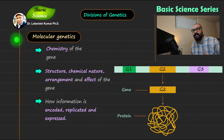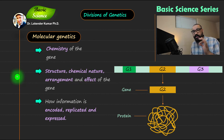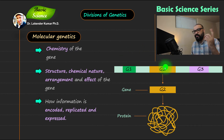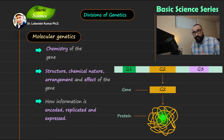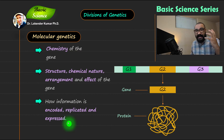Now moving on to the second division, that is molecular genetics. In molecular genetics, we are focused on the molecule — the part of genetics that is called genes. We are going to understand what is the chemistry of the gene. We will also understand structure, chemical nature, arrangement, and the effect of the gene. Now we are focused at the gene level. As you can see in this illustration, there are different genes and there is one specific gene which is getting expressed and synthesizing a particular protein. This particular protein might be important for a particular function. The last important point is how the information is encoded in this gene, and how that information is replicated and expressed in the next generation. This is a very important point in the case of molecular genetics.